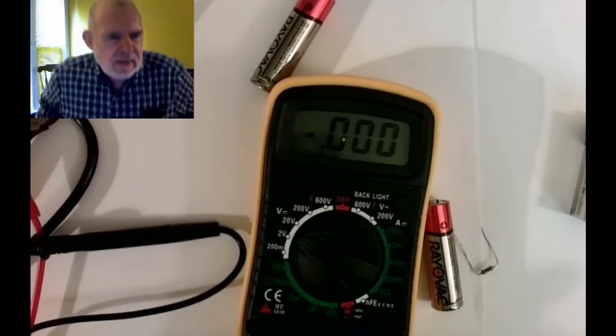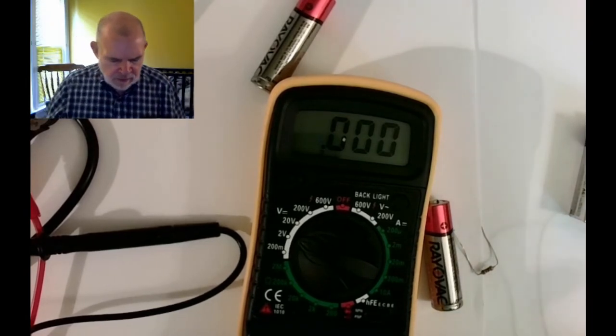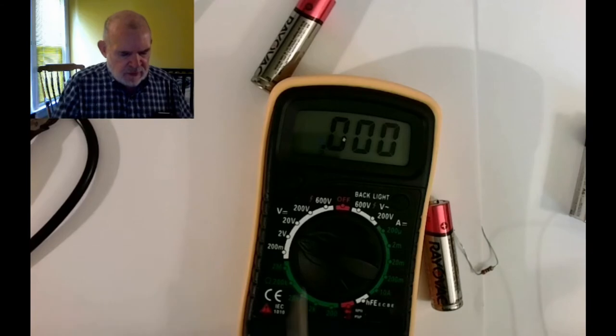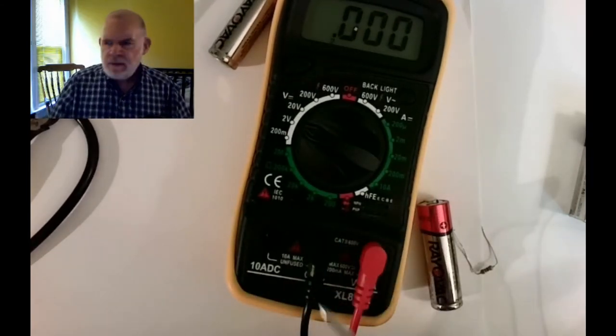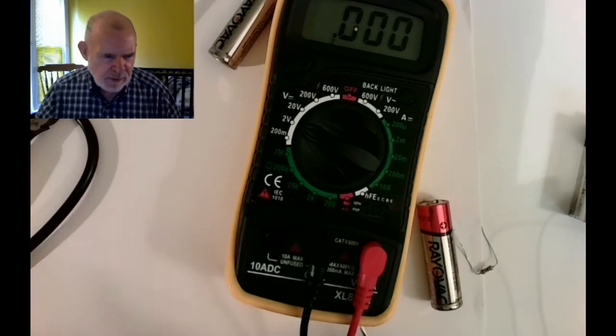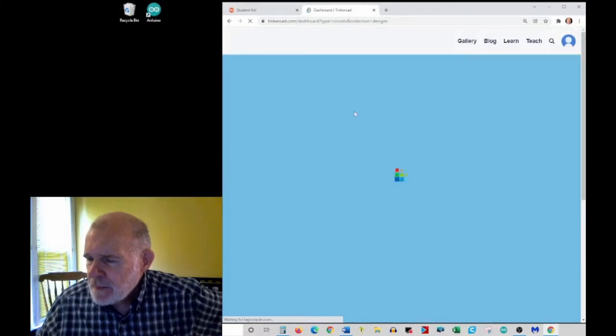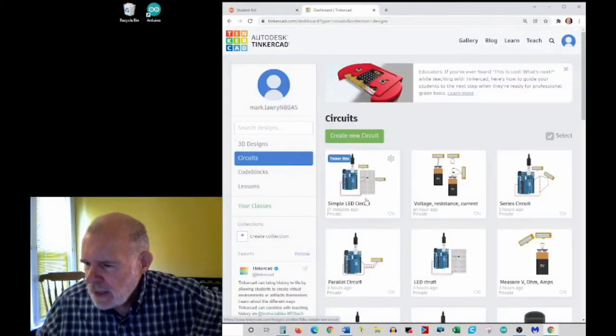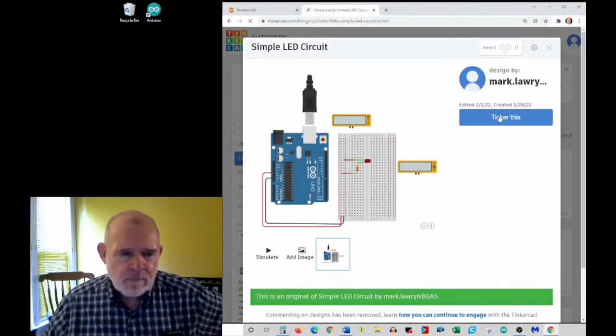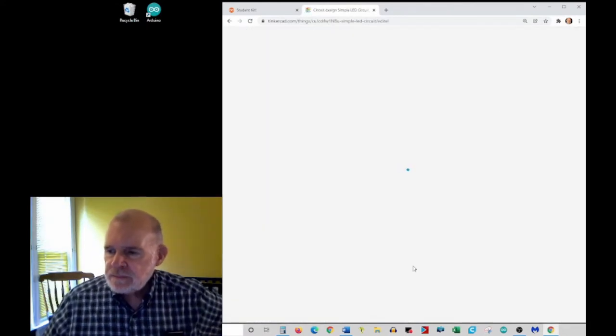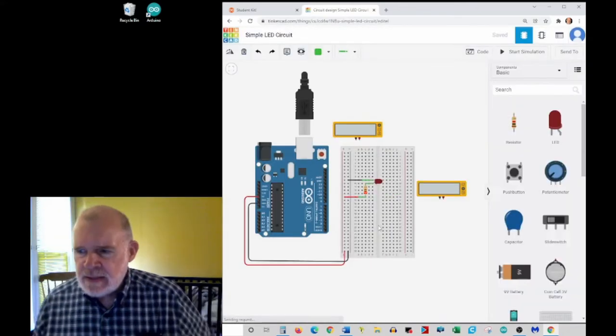Measuring current is a little more difficult. The reason is, to measure current you have to put the multimeter in the circuit. So let me show you here. Let's bring up a circuit we had before.